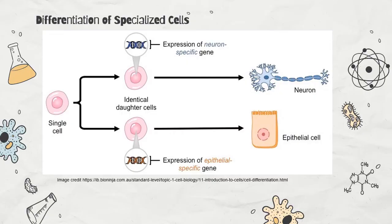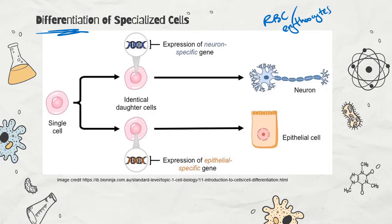One challenge of being a multicellular organism is needing specialized cells — so how does this happen? We start as a single-celled zygote with one set of DNA. All of our cells, except for red blood cells (erythrocytes), have the same DNA. Red blood cells in humans are anucleate — they actually lose their nucleus as they reach maturation, so they don't have any DNA. But all other cells in our body have all the same DNA. So how do we end up with big toe cells looking different from brain cells and liver cells? The answer is different gene expression.